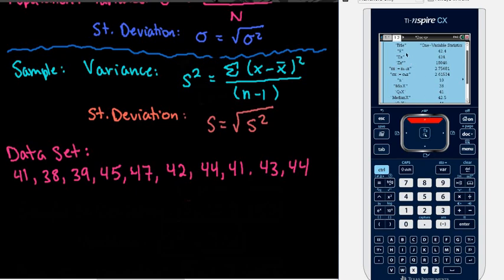So what comes up on your screen is a lot of information. Some important information in here is the X bar. Remember, that is your mean. So if you were doing hand calculations, you would have to take and do 41 minus 42.4, 38 minus 42.4, 39 minus 42.4, all the way down to 44. And then you would have to square all those values and then sum them up.